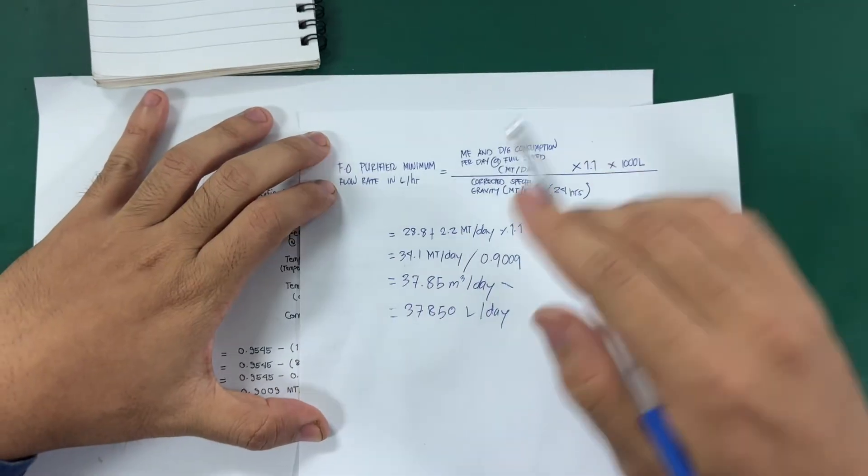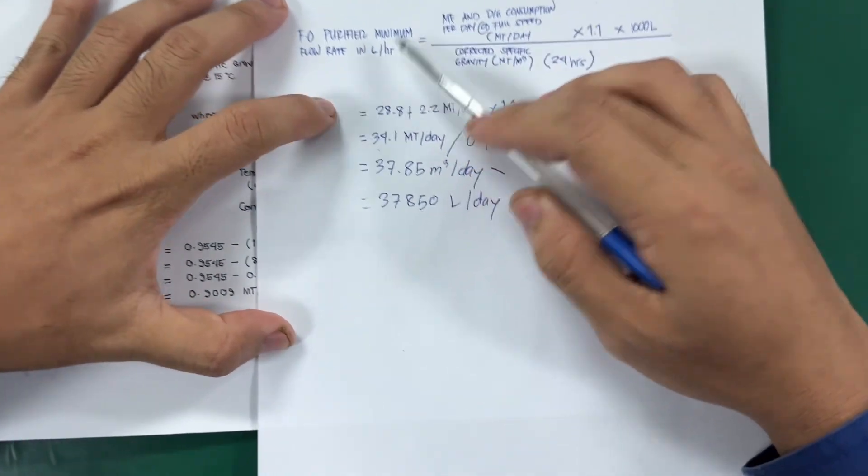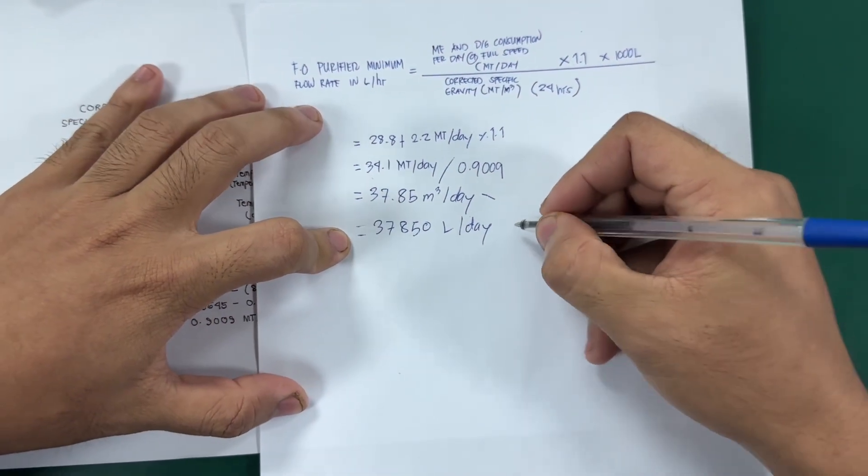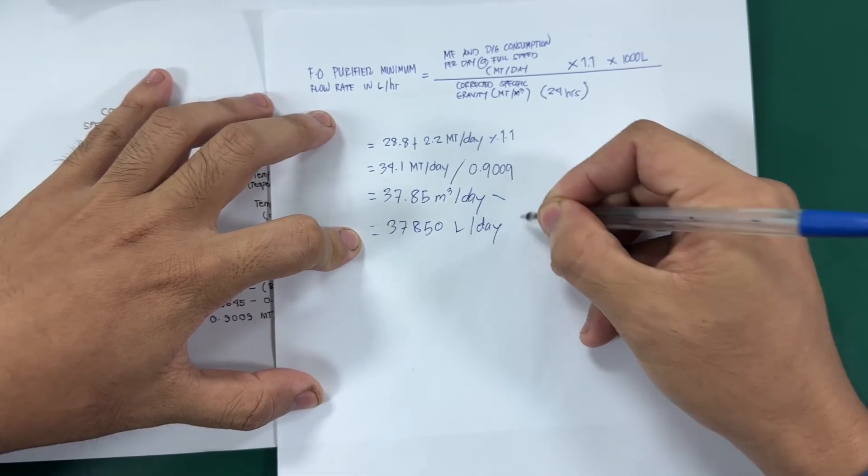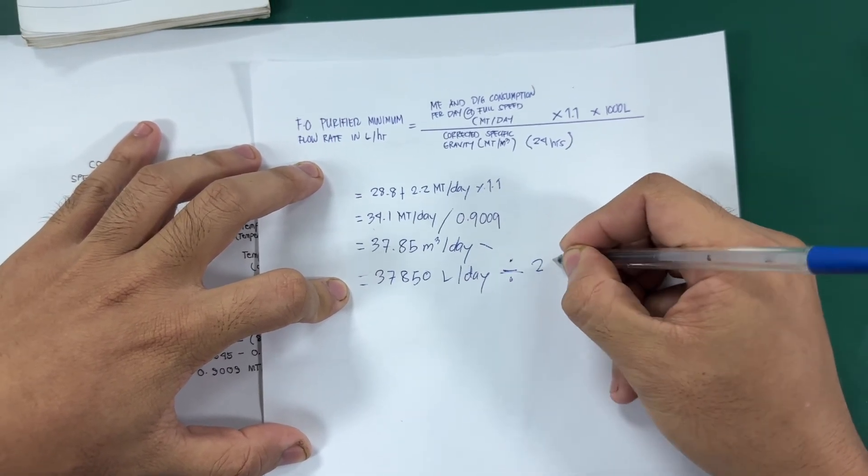Because our minimum flow rate is in liters per hour, we need to divide it in 24 hours. Divide 24 hours.